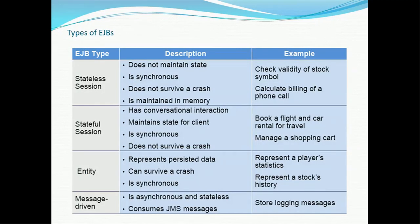There are four types of Enterprise Java Beans, though a few of them have been deprecated over time. The types are: stateless session bean, stateful session bean, entity bean, and message-driven bean. The stateless session bean does not maintain the state of the client. It is synchronous — whenever the request is sent, the response is sent back immediately. These beans do not survive a server crash because they don't maintain client state. They are maintained in memory for better performance. Examples include checking validity of a stock symbol or calculating the billing of a phone call.